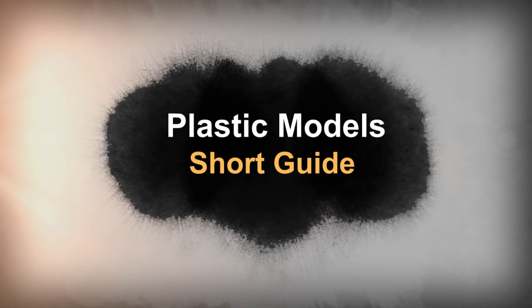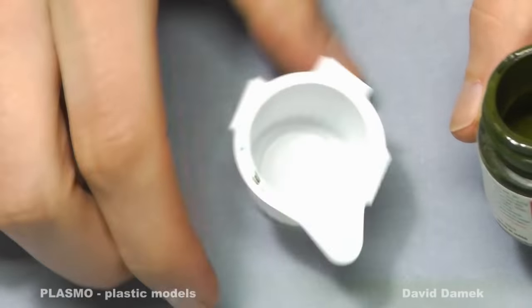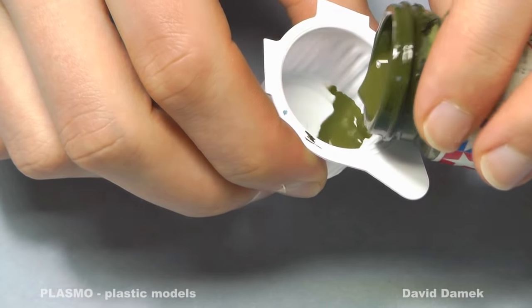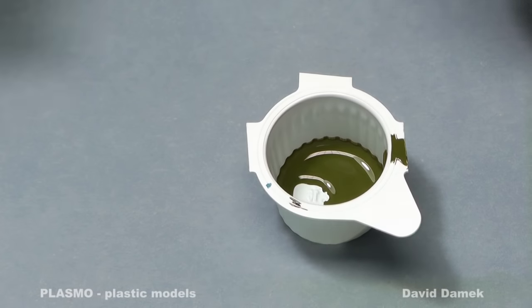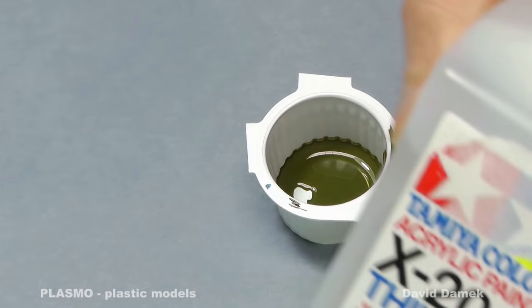I mostly paint my models with Tamiya acrylic colors. In this video I'm using olive color for illustrative purposes. However, if you think of diluting the paint with water, quickly forget it.